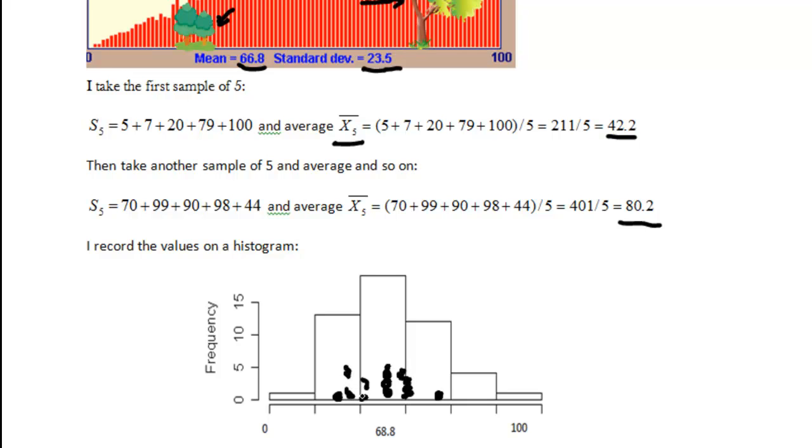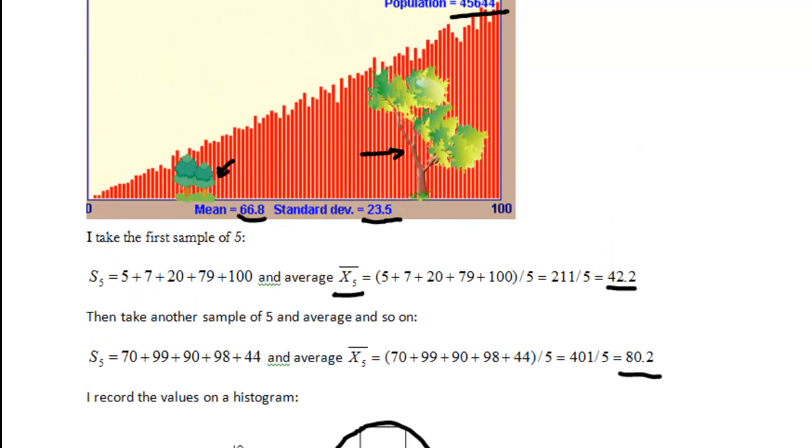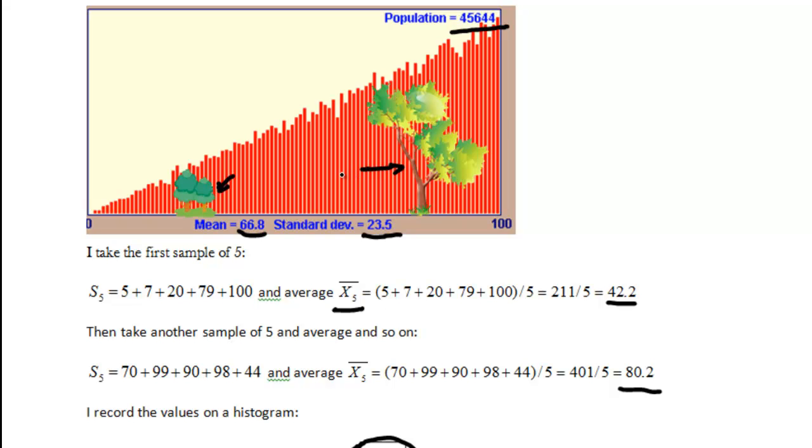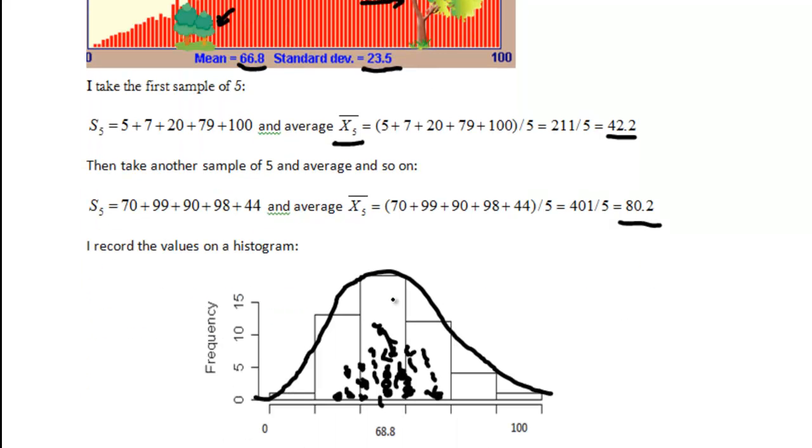And you will notice that as you do this over and over and over again you actually get something like a normal bell-shaped curve. So this is like our normal distribution. Now that's that's amazing because the parent distribution was a triangular type of distribution and we have here by taking samples of these trees, averaging them out and plotting them on a histogram we actually got some kind of bell-shaped distribution.